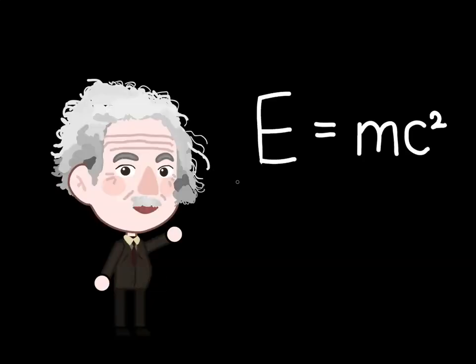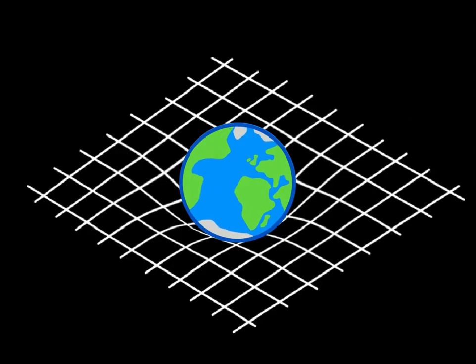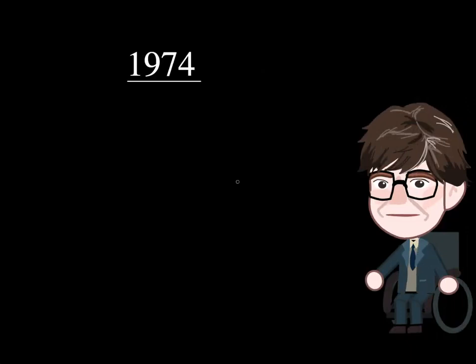Einstein taught us with his theory of relativity that space is not flat, and massive objects can distort spacetime with the force of gravity — and black holes do just this.